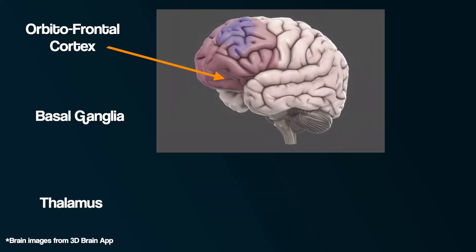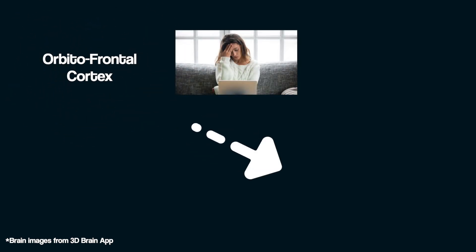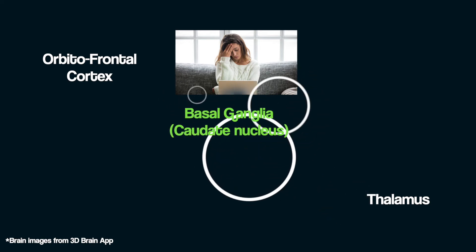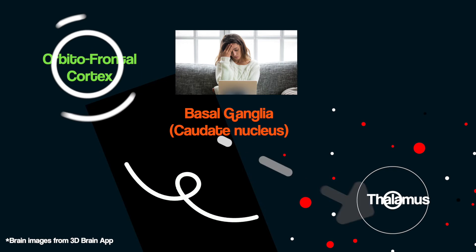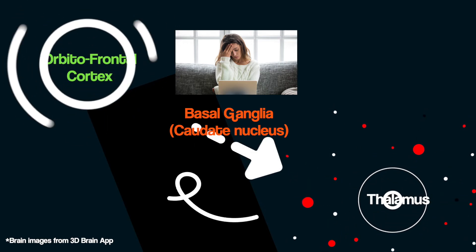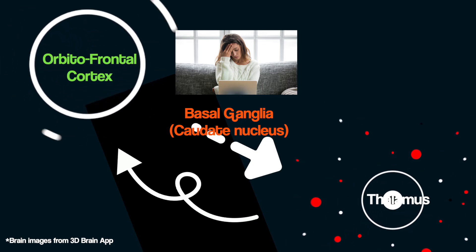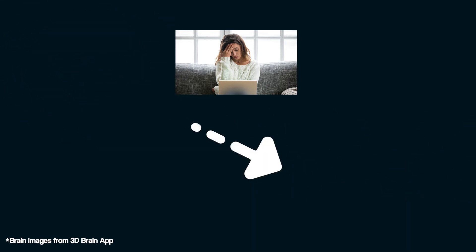The orbitofrontal cortex is involved in our perception of the world, and when we are worried, it sends the signal that we are worried to the thalamus. The thalamus is thought to be the centre of our perception of pain, among other things. This worry signal is normally suppressed or filtered by the caudate nucleus in the basal ganglia, but if there is something abnormal about the circuit at this point, then the thalamus becomes strongly alerted and confirms the worry back to the orbitofrontal cortex, which then starts obsessing about this worry. In other words, this worry circuit is overactive, and that might then lead to compulsive behaviours to cope with this anxiety.